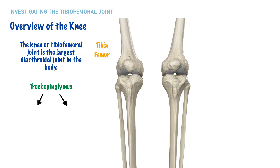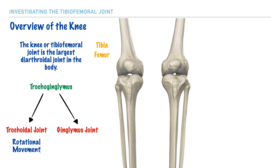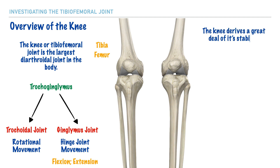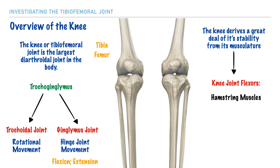What we have here is the combination of two terms: trochoidal and ginglymus. With a trochoidal joint, we have some rotation that takes place. Through a ginglymus joint, we have hinge joint movements such as flexion and extension. And because the knee is responsible for bearing a great deal of the body's weight, it needs a great deal of stability. Part of its stability is achieved from its surrounding musculature, which includes the knee joint flexors — the hamstring muscles — and the knee joint extensors — the quadriceps muscles.